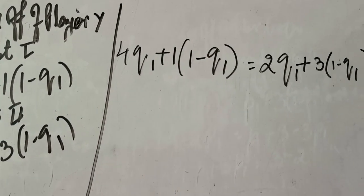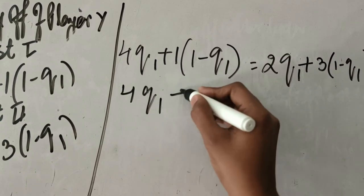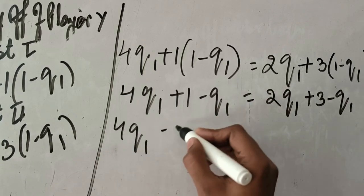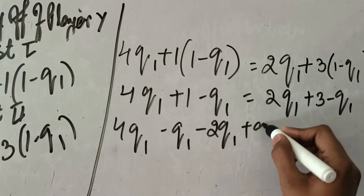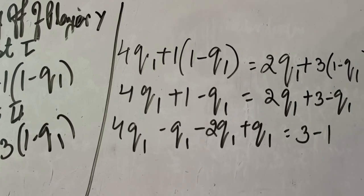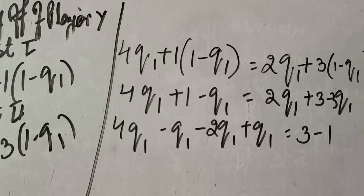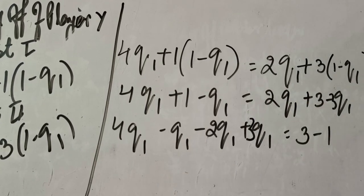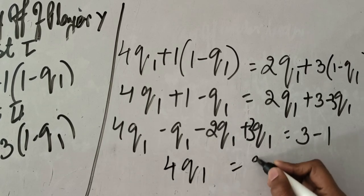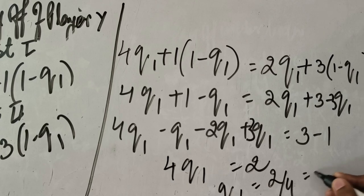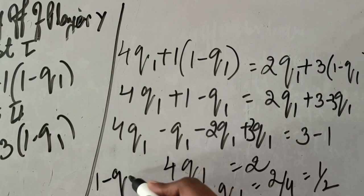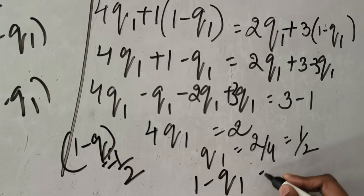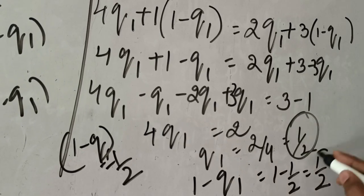Opening the brackets: 4q1 plus 1 minus q1 equals 2q1 plus 3 minus q1. Taking the q's on one side: 4q1 minus q1 minus q1 minus 2q1 plus q1 equals 3 minus 1. Solving this gives 4q1 equals 2, so q1 equals 2/4, which is 1/2. Therefore 1 minus q1 equals 1 minus 1/2, which is also 1/2.